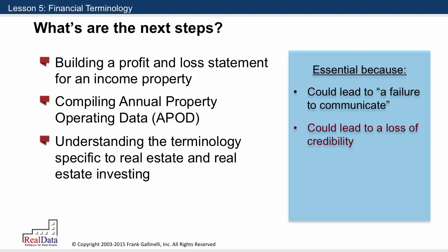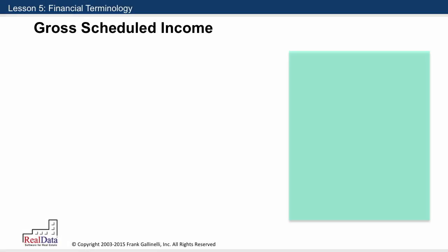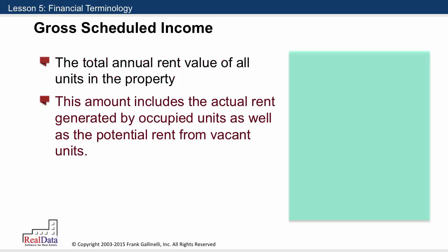So it's really important to make sure that you understand the basic terminology. We're going to start with a little subset of that terminology right now — the terms that are necessary for building that APOD, that profit and loss. The first of these terms is gross scheduled income, which is the total annual rent value of all units in the property. This amount includes the actual rents generated by occupied units, as well as the potential rent from vacant units. Essentially, this is the top line on your P&L, on your APOD.